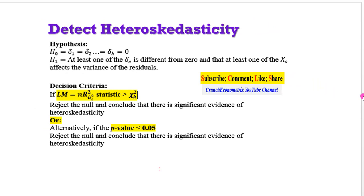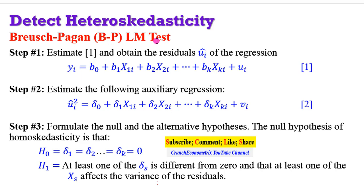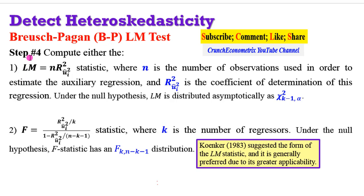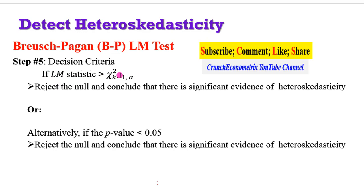Let's take a look at the process of engaging the Breusch-Pagan LM test and derive the LM statistic and the chi-square statistic. Step one: obtain the residuals from the regression. Step two: estimate the auxiliary regression. Step three: formulate the hypothesis as earlier explained. Step four: compute either the LM statistic or the F statistic. Since the LM statistic is easier to compute, we will go with the LM. Once the LM statistic is higher than the chi-square statistic, we reject the null hypothesis of homoskedasticity. Or if the p-value is lower than 0.05, we reject the null hypothesis of homoskedasticity.